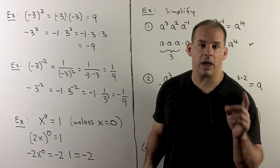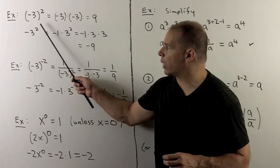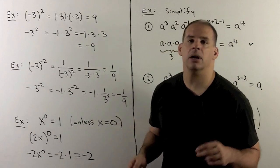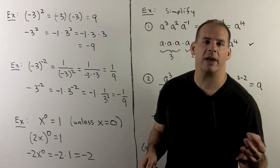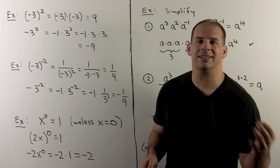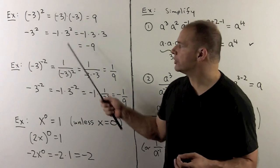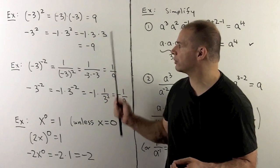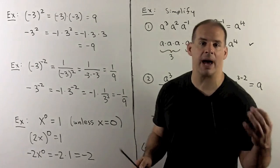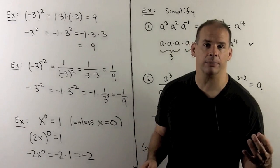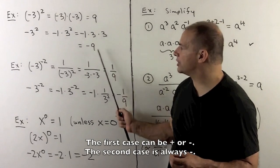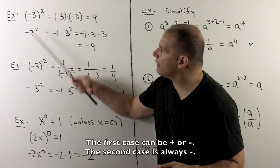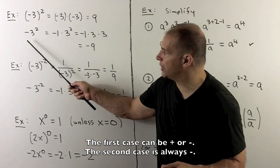On the other hand, if I have minus 3 squared with no parentheses, this is a shorthand for minus 1 times 3 squared. So here we have minus 1 times 3 times 3, which gives a minus 9. Note our answers are different here, so we need to be aware of this difference in notation.